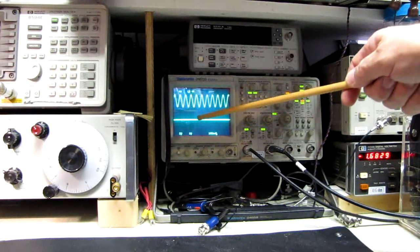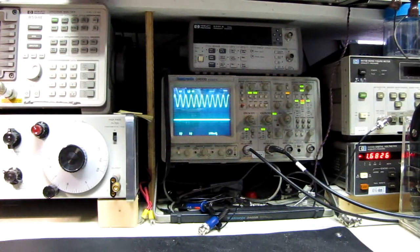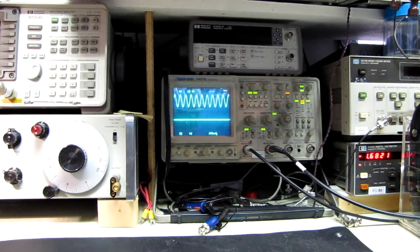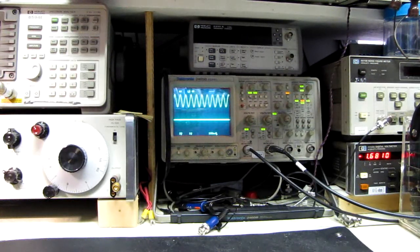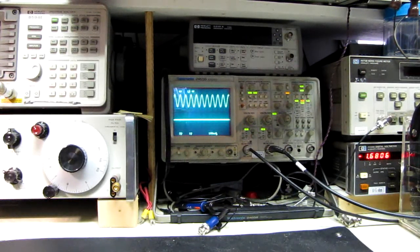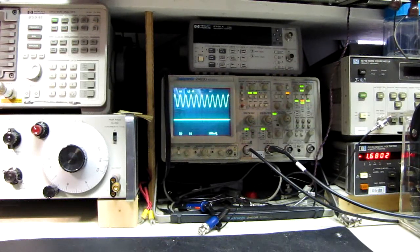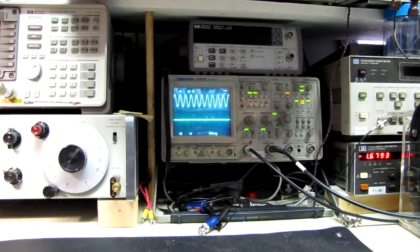On the bottom I've plugged in my rubidium standard which is cold and has been off for some time now, and I'm going to turn it on. At first it's just going to be a blur because this is not going to be locked. And as it gets closer and closer to being warmed up in the lock, you'll see the sine wave crossing slow down.